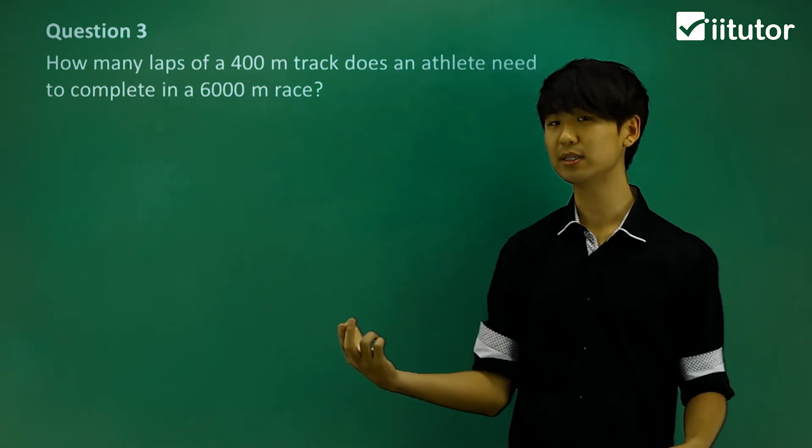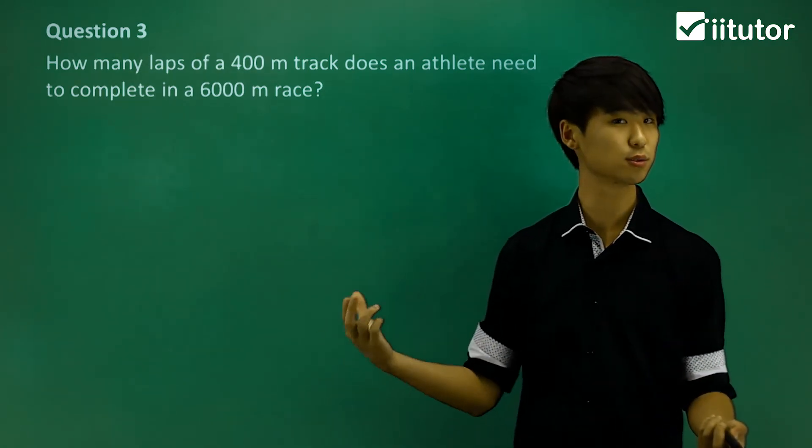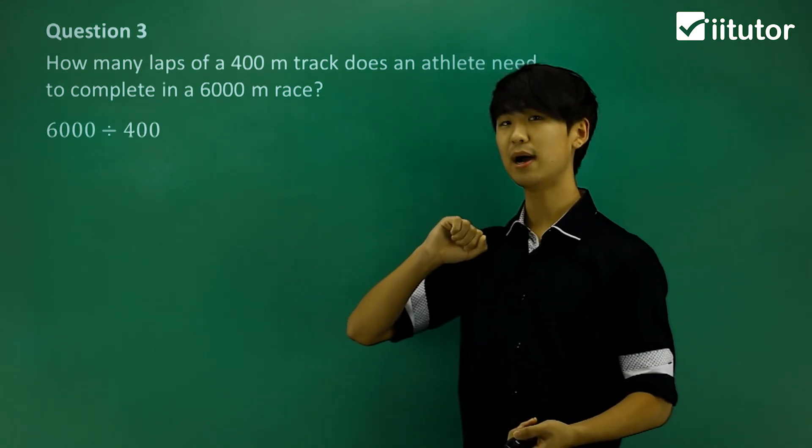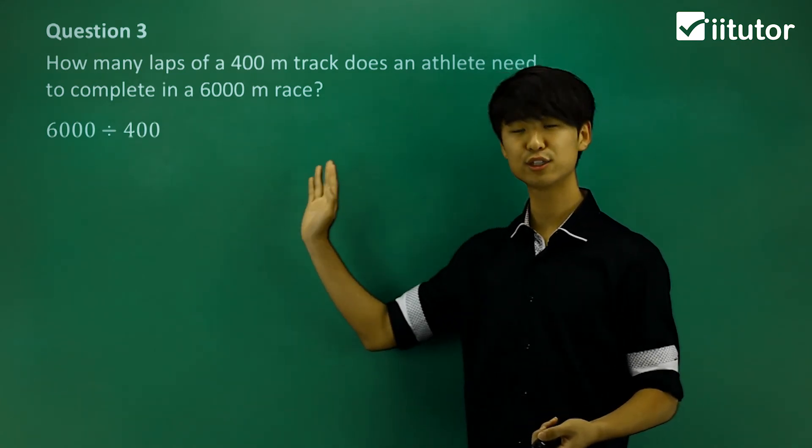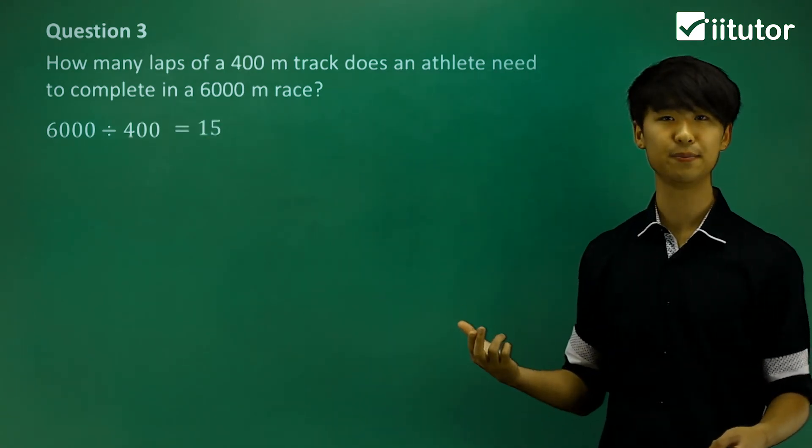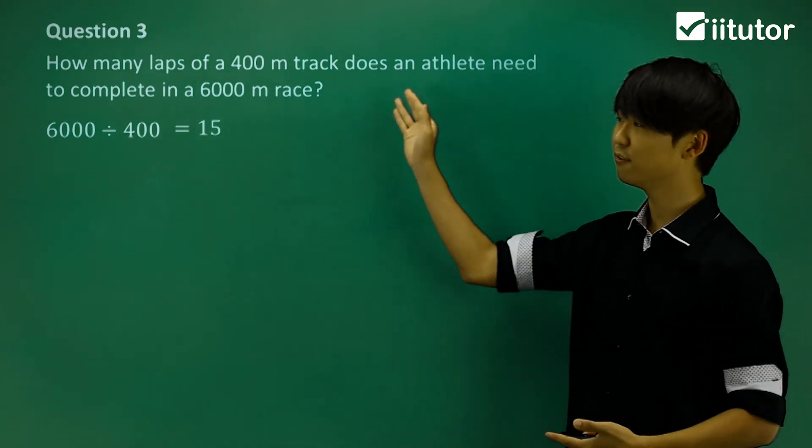We're going to be considering some sort of division or some sort of quotient. So I'm going to do 6,000 meters divided by 400 meters. If I calculate this, it will be 15. So it will be 15 laps to complete this race.